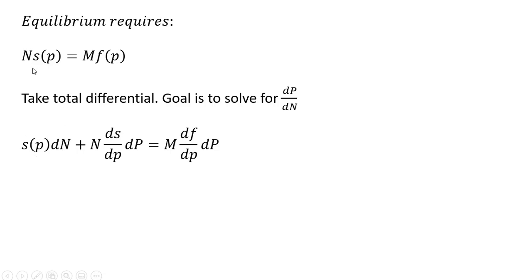And then, we need to do one more thing on the left-hand side. We're going to take N and multiply it by the derivative of the supply equation with respect to price, ds/dp. Then, that's multiplied by the change in price, dp. So, we took the total differential of the left-hand side.